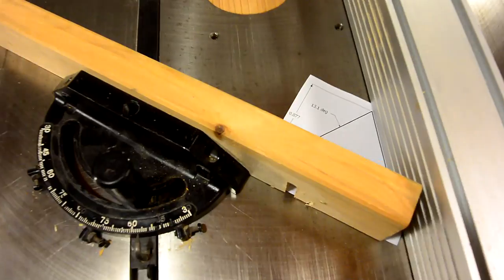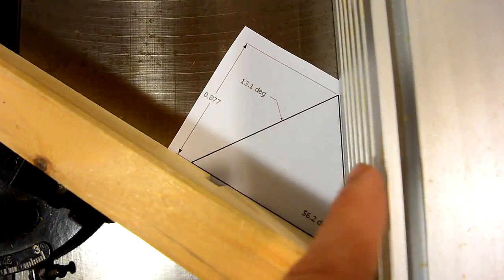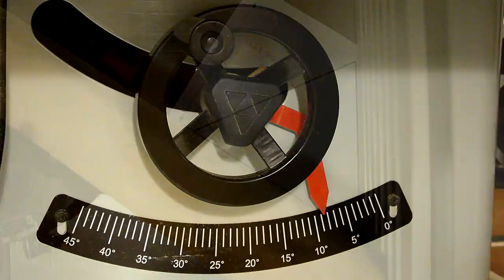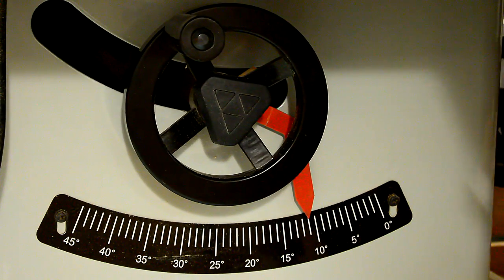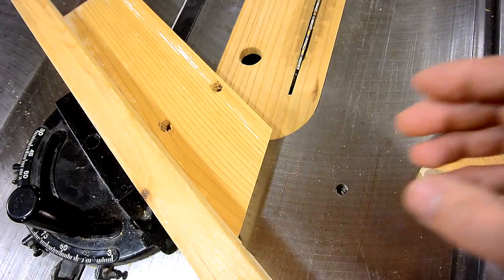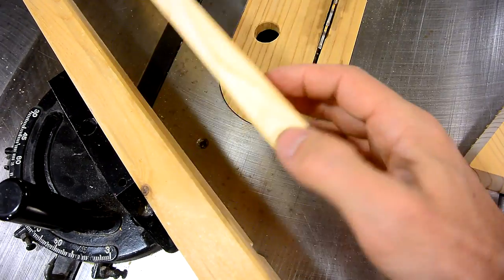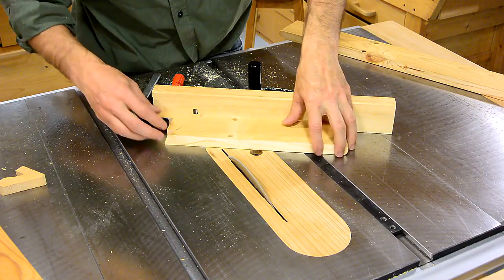I just set the miter gauge to the angle of the triangle, and I'm using the paper printout against the fence to check that. And the blade tilt changes to 13.12 degrees. Just by flipping this workpiece over between cuts, I can get all the bevels correctly.